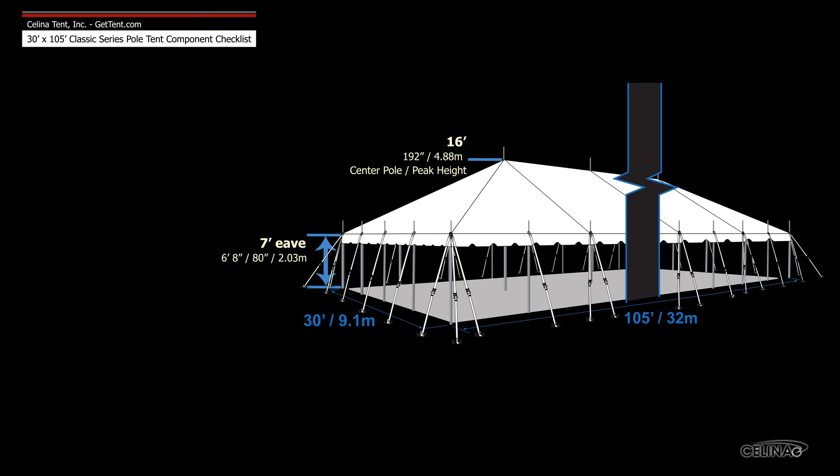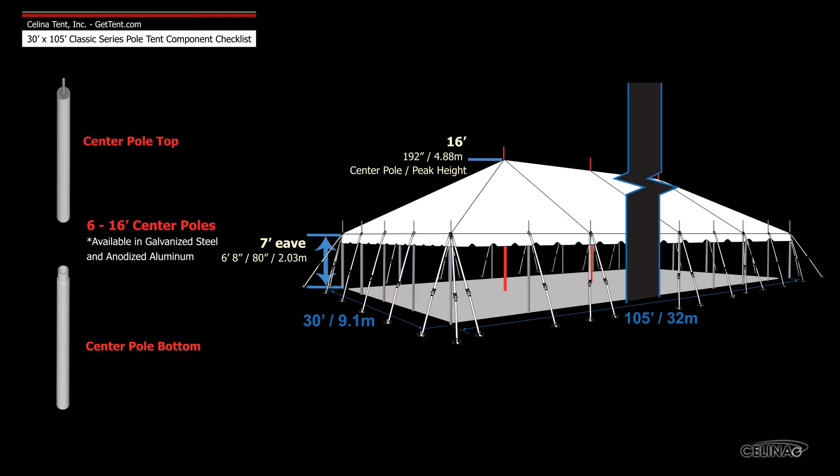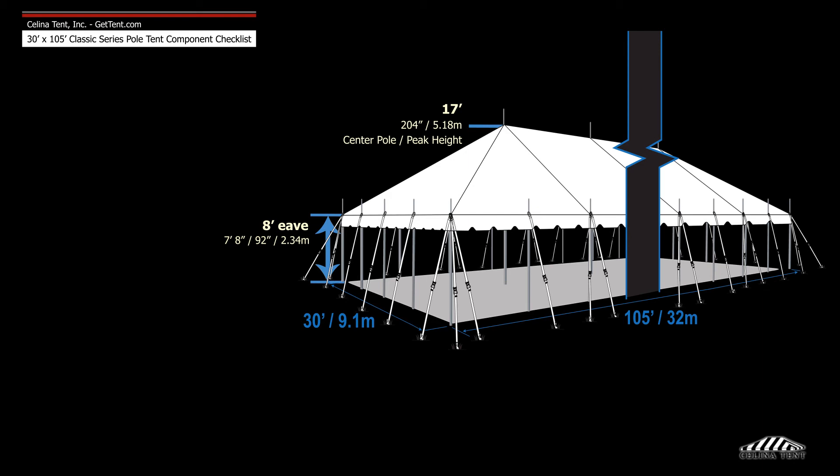Poles for tents with a 7 foot eave height include six 16 foot center poles and 36 seven foot side poles. If the desired eave height is 8 foot instead of 7 foot, the side poles will be 8 foot tall with 17 foot center poles.